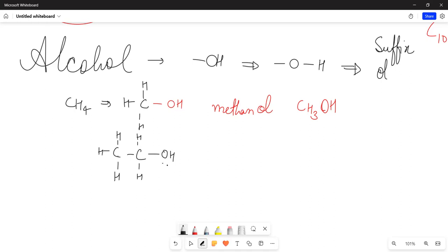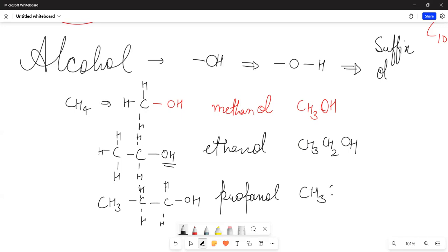When we have 2 carbons, what will come? Ethanol. That is CH3CH2OH. For 3 carbons, what will become? CH3CH2, 2H here, 2H here, 2H and 1 OH here. What do we call it? Propanol, CH3CH2CH2OH. This will be the molecular formula we will write: CH3OH, then C2H5OH, this will be C3H7OH.